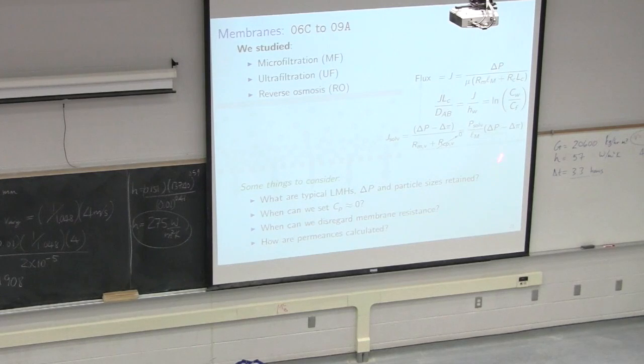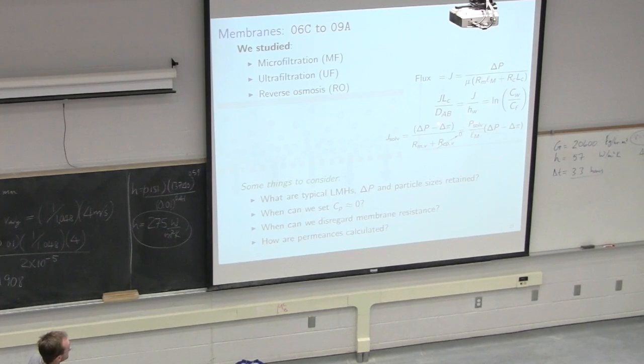Our resistance changes, either the medium resistance is important or the cake resistance is important. So for microfiltration, the medium is important. For ultrafiltration, we build up this layer on the surface of the membrane that provides some resistance. And in RO, what happens is we have an additional resistance that we face by delta pi.